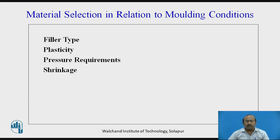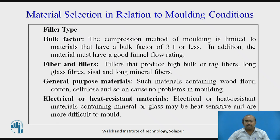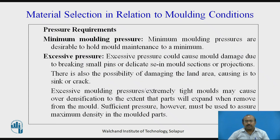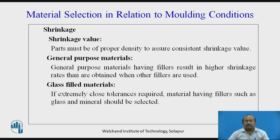Material selection in relation to molding conditions involves filler type, plasticity, pressure requirement, and shrinkage. For filler type, parameters including bulk factor, fiber and fillers, general purpose material, and electrical or heat resisting materials must be considered. Regarding pressure requirement, minimum molding pressure is desirable to keep mold maintenance to a minimum. Excessive pressure with extremely tight molds may cause over-densification, causing parts to expand when removed from the mold. However, sufficient pressure must be used to assure maximum density in the molded part. For shrinkage, parts must be properly densified to assure consistency in shrinkage values; general purpose materials and glass-filled materials must be considered separately when evaluating shrinkage in relation to molding conditions.